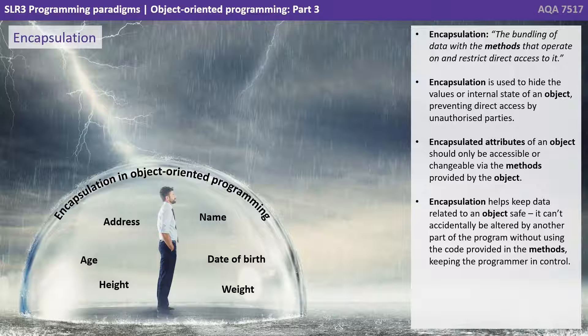Encapsulated attributes of an object should only be accessible or changeable via the methods provided by that object. Encapsulation is designed to keep data related to an object safe. It can't accidentally be altered by another part of the program without using the code provided in the methods, thus keeping the programmer in control.